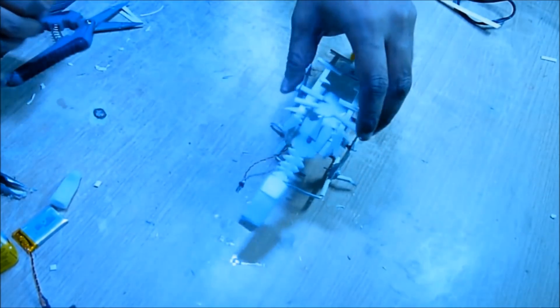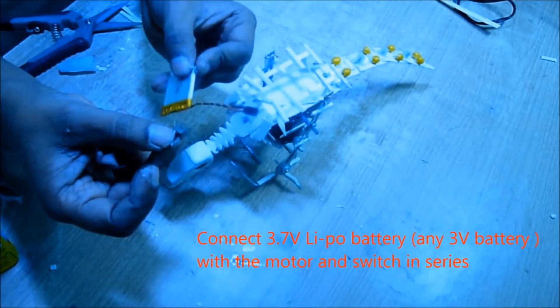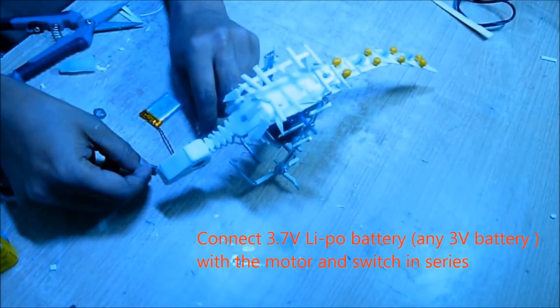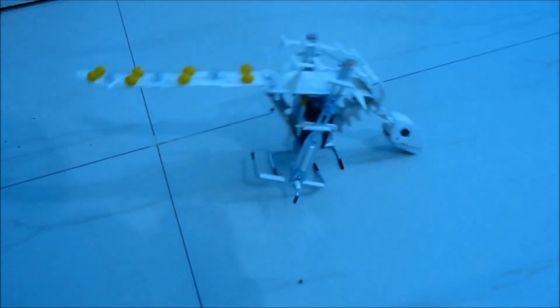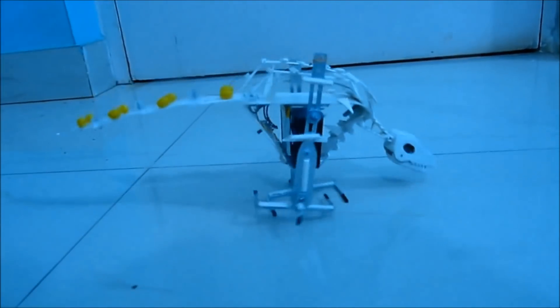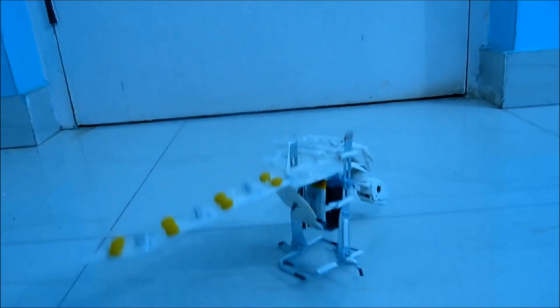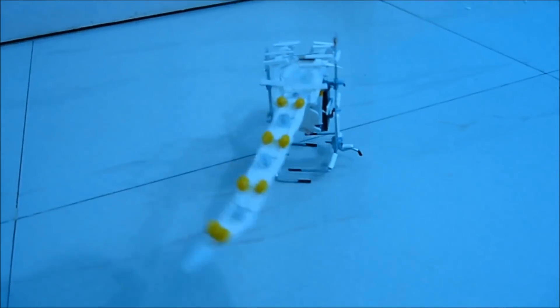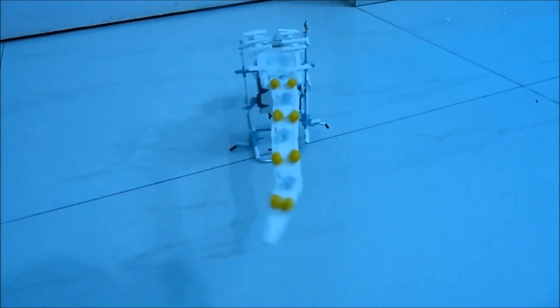We are going to connect a small switch and a 3.7 volt battery in series with the motor. Once done, if you power it up, see the dinosaur is moving. It is working. See how cool it is moving.